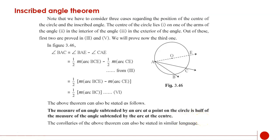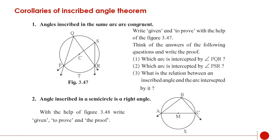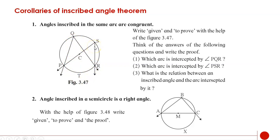On the basis of this theorem, there are two corollaries. First corollary: angles inscribed in the same arc are congruent. As shown in the figure, measure angle PQR equals half of measure arc PTR, and measure angle PSR equals half of measure arc PTR. Since this arc is common, measure angle PQR equals measure angle PSR, therefore angle PQR is congruent to angle PSR.